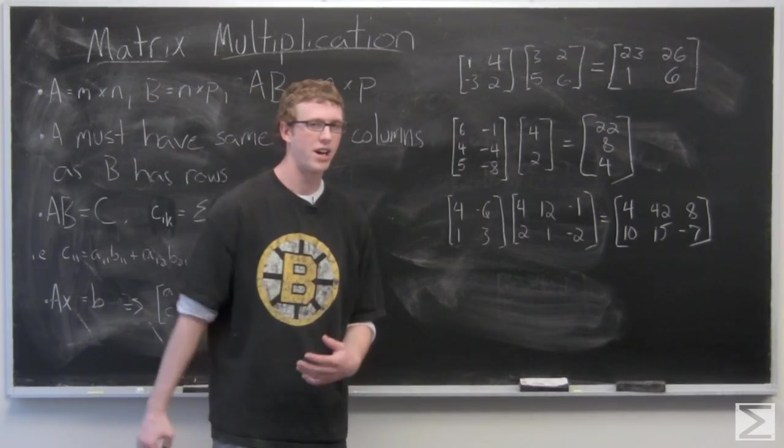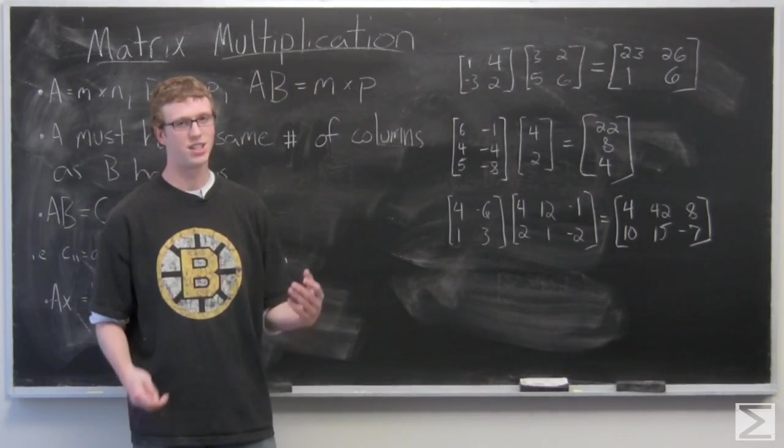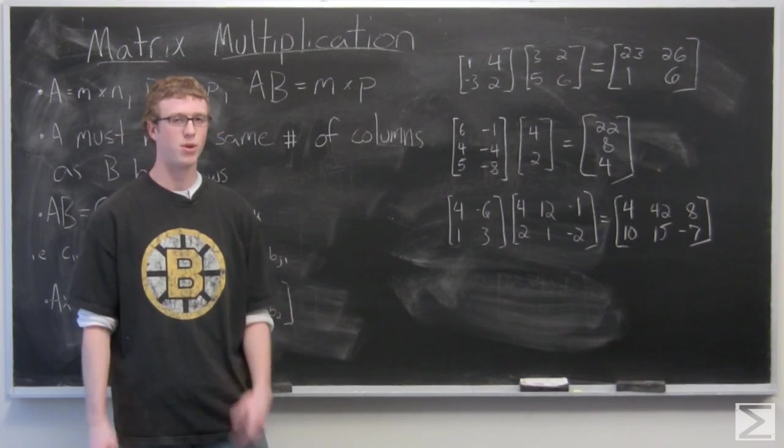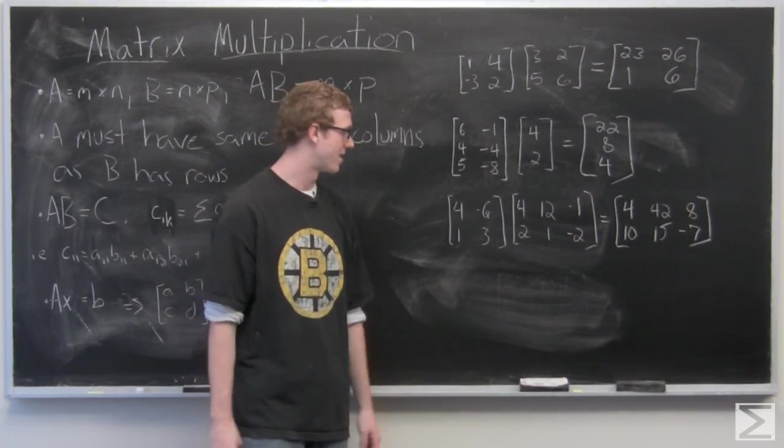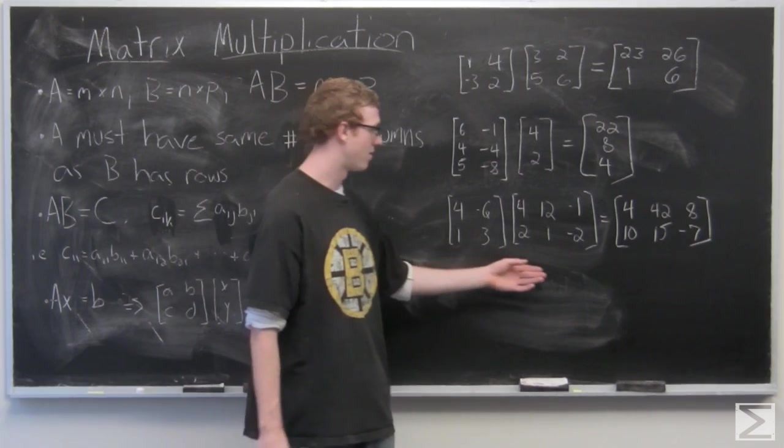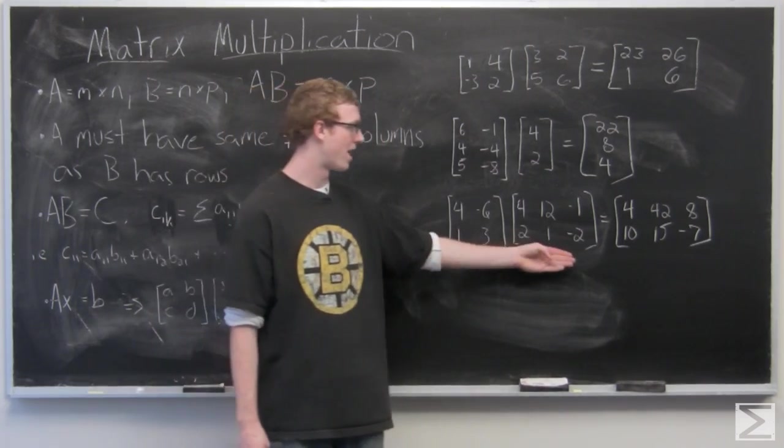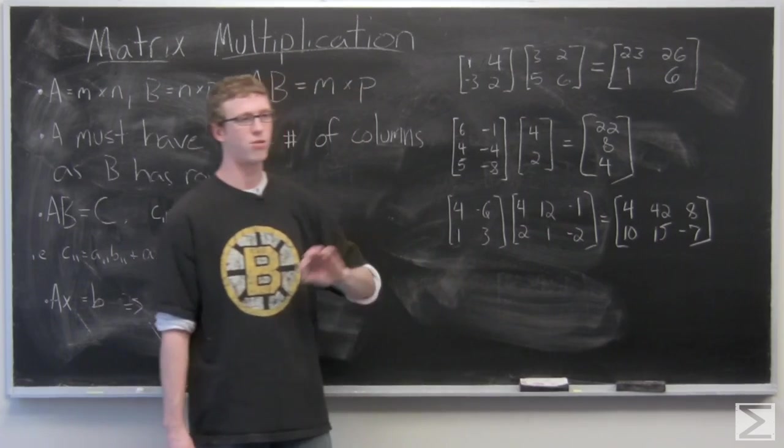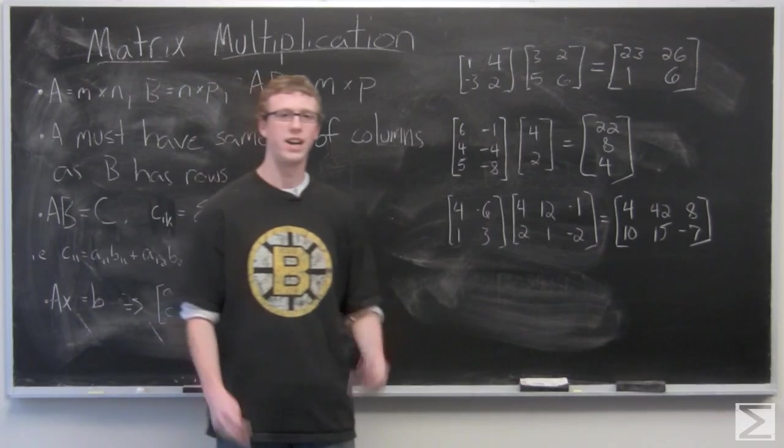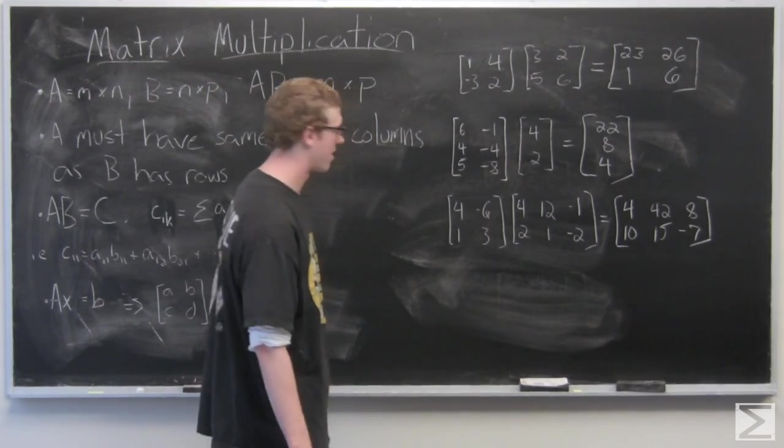Let's notice that AB doesn't equal BA in most cases with matrix multiplication. Just looking at this last example, we have a 2x2 and a 2x3. If you tried to multiply the 2x3 times the 2x2, you would get 2x3 and 2x2. So you can't actually multiply those matrices together.